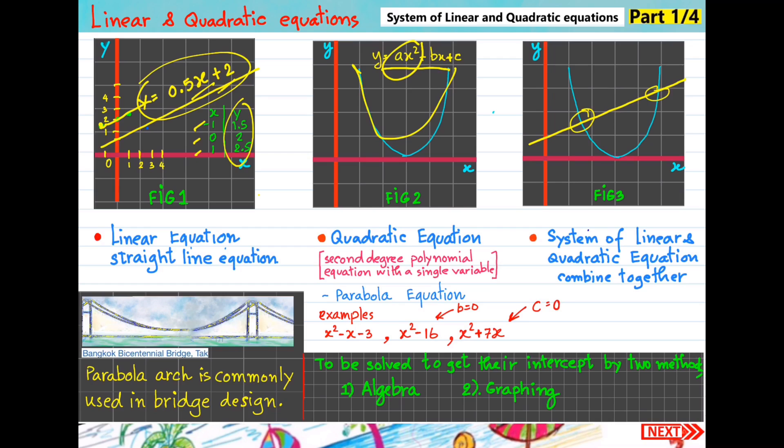Take a look at examples. x squared minus x minus 3 - this one is the same as general standard form. Example 2: x squared minus 16. This example, b equals 0, that's why the remaining is ax squared plus c, or x squared minus 16. For the last example, x squared plus 7x - c equals 0, that's why it's just only remaining x squared plus 7x.